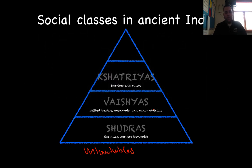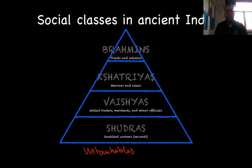Then you have the Kshatriyas — these are your warriors and rulers. Kings and queens would be in here. But because of the religious impact that Aryan society had on India, the Brahmins are up at the top. These are your priests, your scholars, the people that run the universities — the most enlightened ones at the top of society.